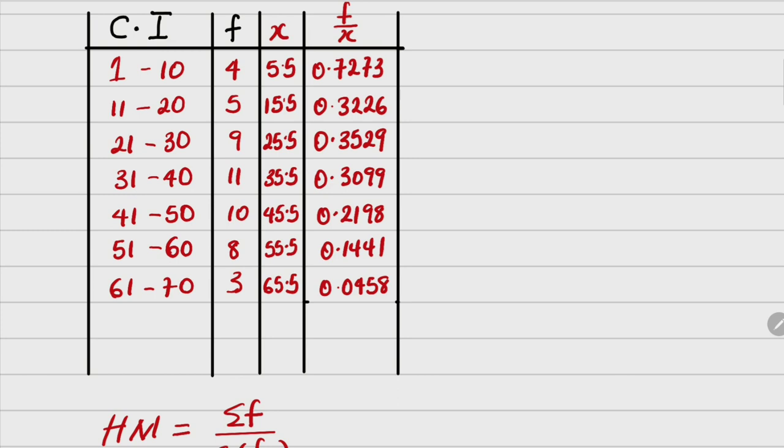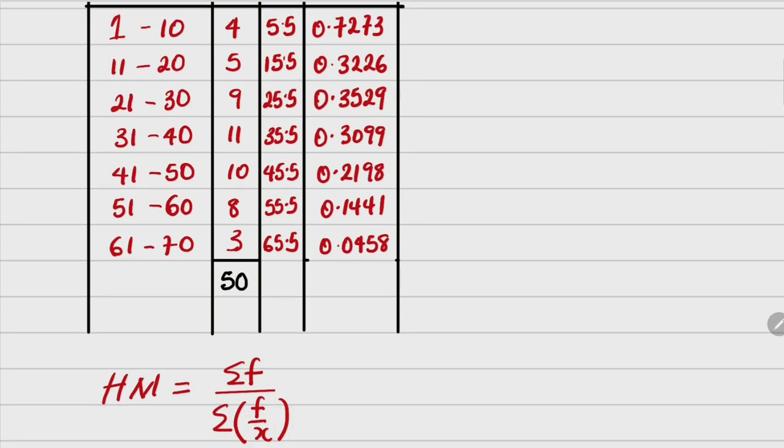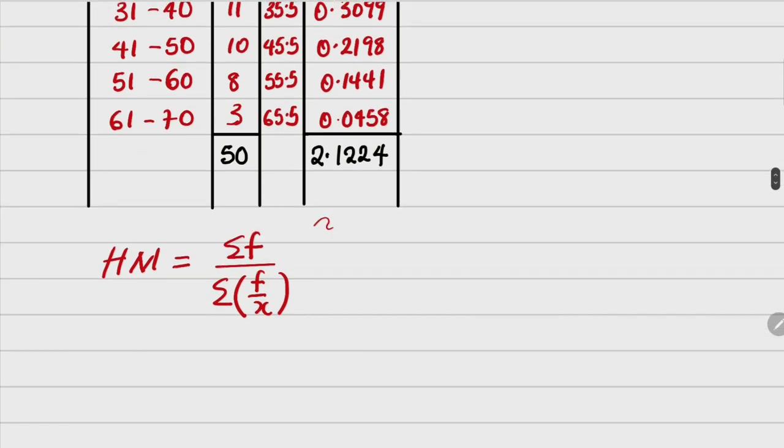We've gotten the column f over x and everything is set. We've done this already finding the summation f, which is 50. From the formula, we need to find summation f over x, which is this. Our answer will be 2.1224 using calculator. This will now be summation f is 50 over 2.1224. Dividing this, you're going to have 23.558. So approximately, our answer is 23.6, that is to one decimal place.